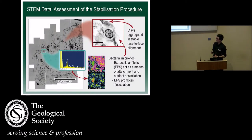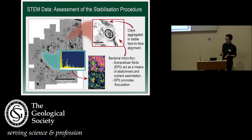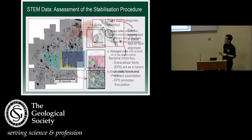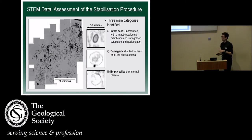Moving on to the data set at the nanometre scale, our nanometre scale data allows us to understand the composition of our flocs. In floc research, 2D STEM data sets are quite common, so it doesn't really offer much else. However, what it did allow us to do was to investigate the intracellular integrity of our microorganisms, and we did this to basically ascertain whether we had successfully stabilised our flocs for analysis. What we found — and I won't go into great detail — but essentially, it was fine.